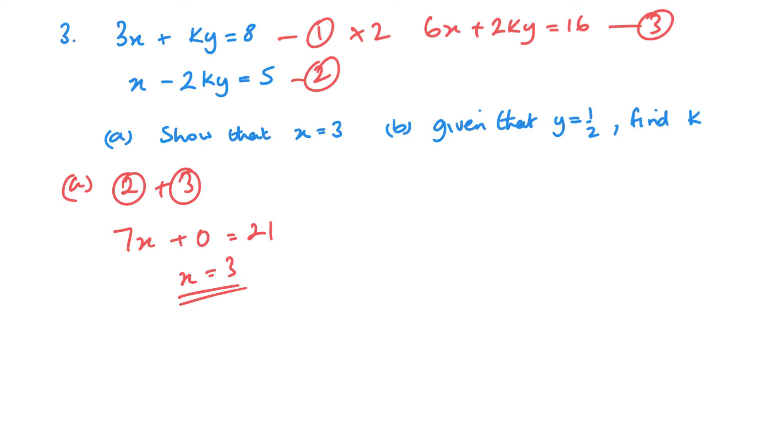Now part b then tells us that y is a half. So if I start with from equation 1 or even from equation 2, it doesn't really matter. I can go from equation 2, it doesn't matter. So x is 3. So we have x minus 2ky equals 5. x is 3, y is half. So we've got 3 minus k equals 5, so k is going to be negative 2.